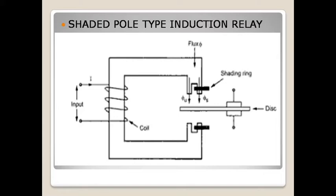That current is sensed by the current coil, and current coil supply is given to the left limb of this induction relay. When current flows through this coil, it produces magnetic flux. The flux is divided into two parts: the unshaded part and the shaded part.